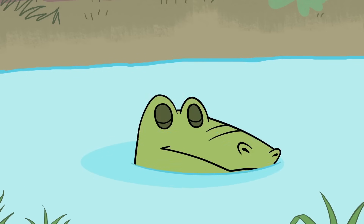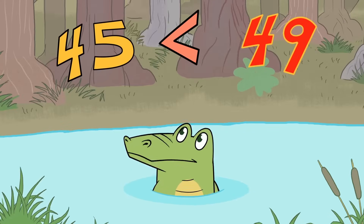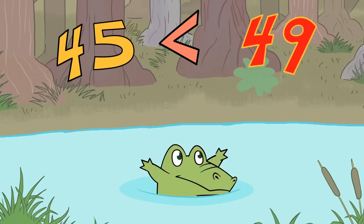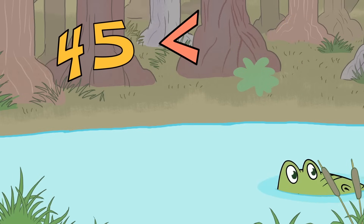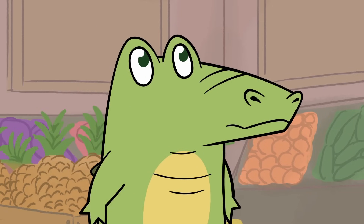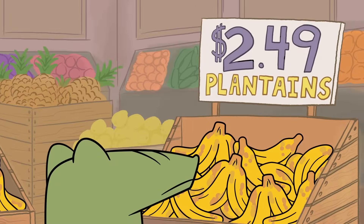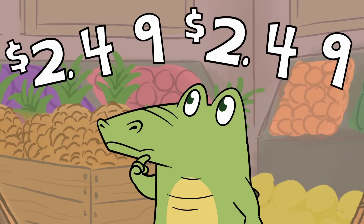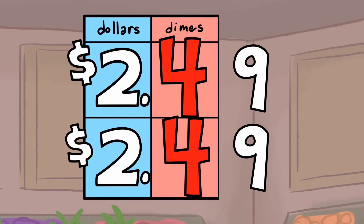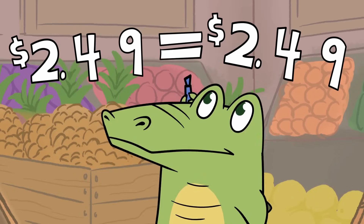The hungry alligator eats the number that is greater. The number that is least is never part of his feast. Now the numbers are the same on both sides — the Gator wants to eat, but he can't decide. Neither is greater or less, so the alligator writes an equal sign.